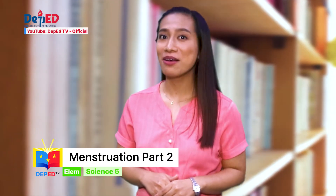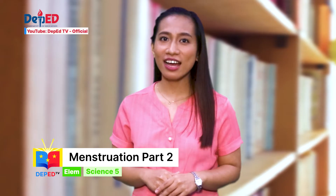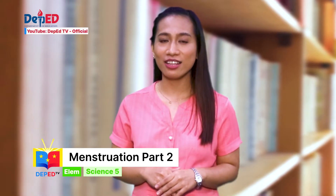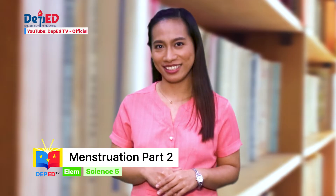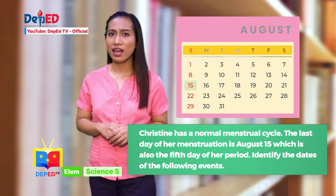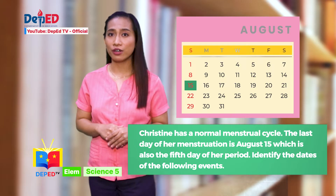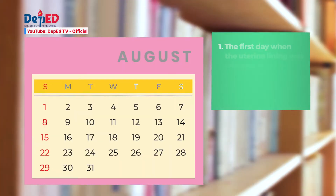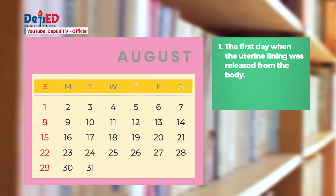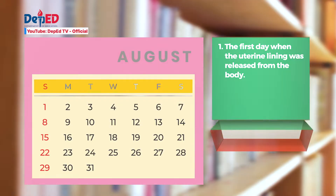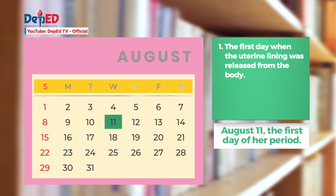For this part, based on what you've learned from our lesson, read and analyze the situation, then supply the correct date being asked in each number. You may refer to a calendar and the chart of the menstrual cycle as a guide. Christine has a normal menstrual cycle. The last day of her menstruation is August 15, which is also the fifth day of her period. Identify the dates of the following events. Number 1: The first day when the uterine lining was released from the body. The answer is August 11, the first day of her period.